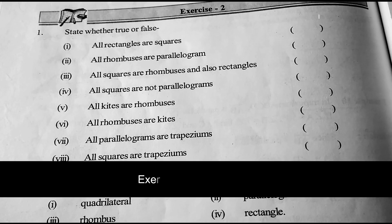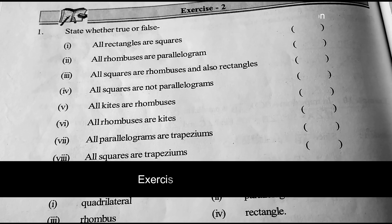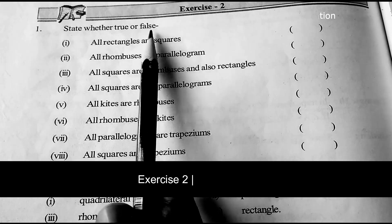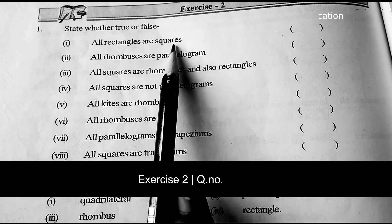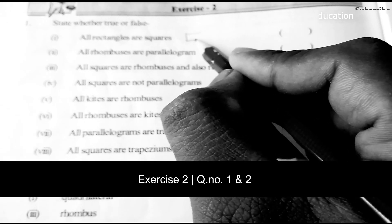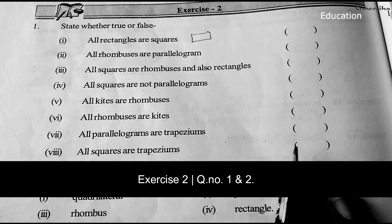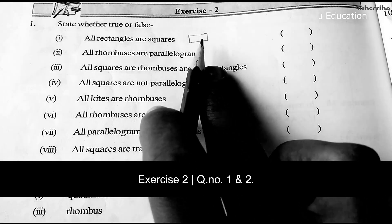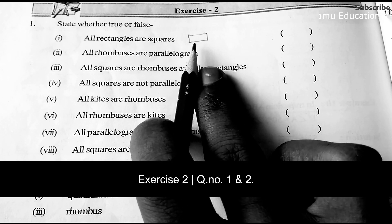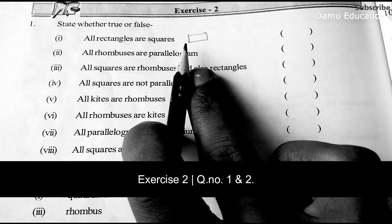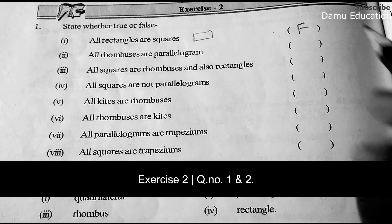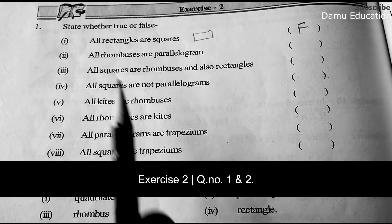Hello viewers. In this module we are going to discuss Exercise 2, first question: state whether true or false. All rectangles are squares. Rectangles have all angles equal to 90 degrees, but not all sides are equal, so all rectangles are not squares. This is false.